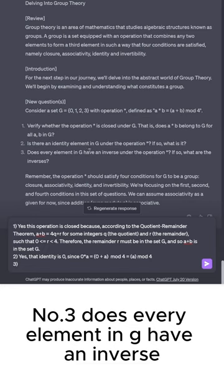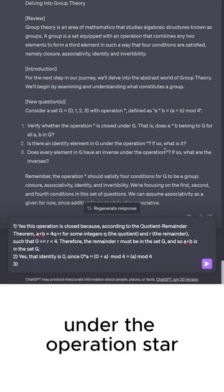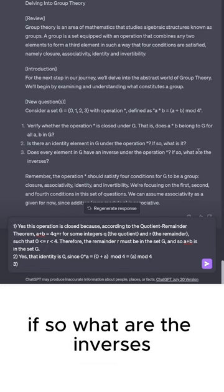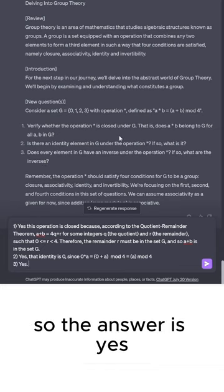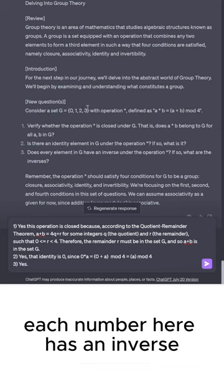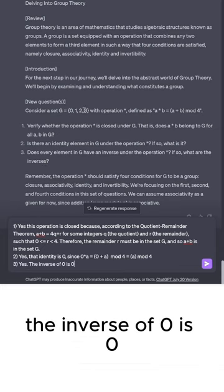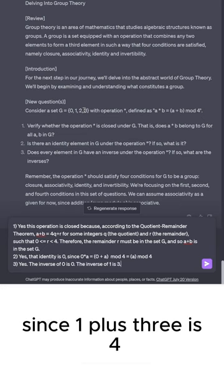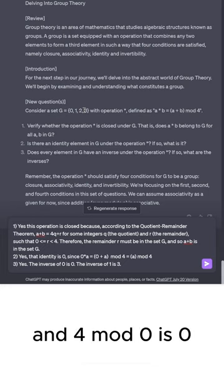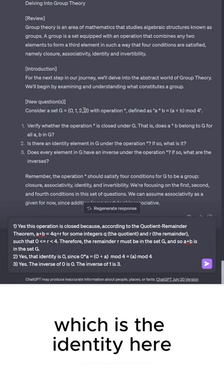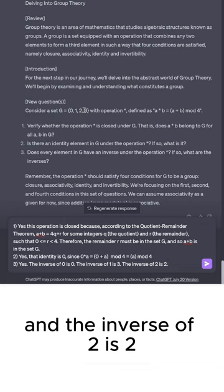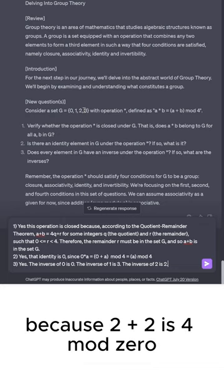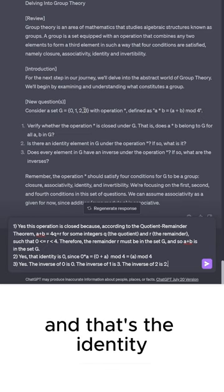Number three, does every element in G have an inverse under the operation *? If so, what are the inverses? So the answer is yes. Each number here has an inverse. The inverse of 0 is 0. The inverse of 1 is 3 since 1+3 is 4 and 4 mod 4 is 0, which is the identity here. And the inverse of 2 is 2 because 2+2 is 4 mod 4, which equals 0. And that's the identity.